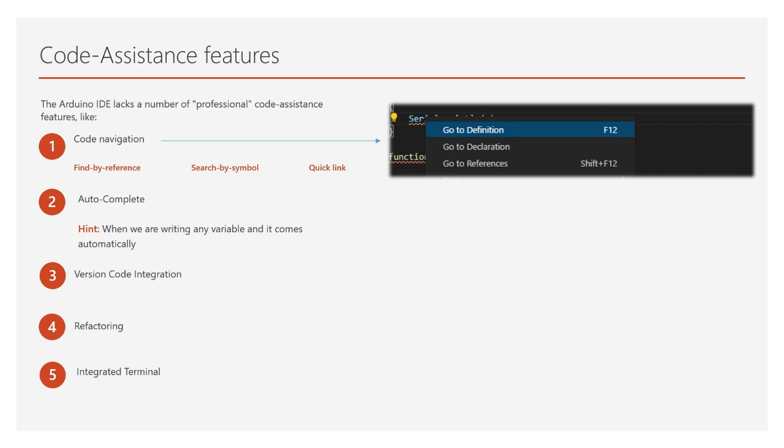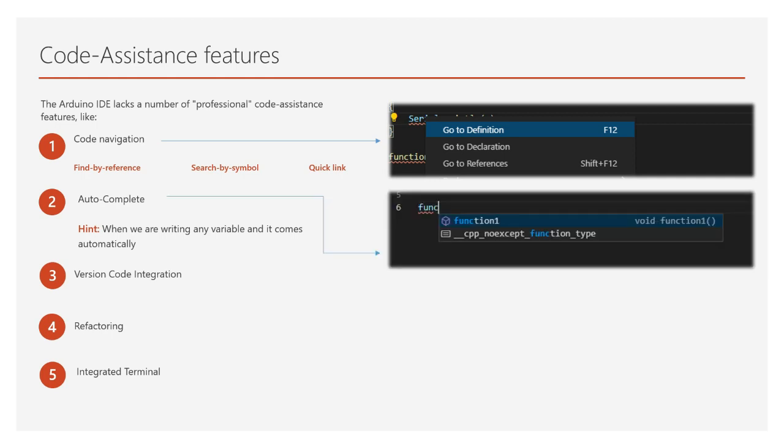The next feature is autocomplete. This feature can help to complete constant names, but it also provides insights into the parameters a function may expect. Suppose you are defining a function with the first variable being a character, the second a string, and the third an integer — whenever you use that function, autocomplete will automatically show what variables are going to be inserted.